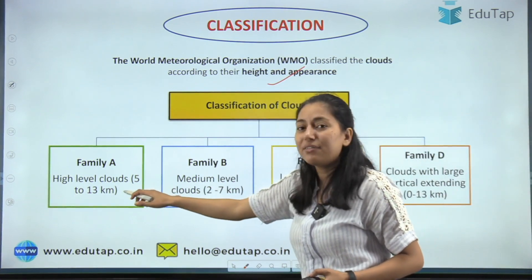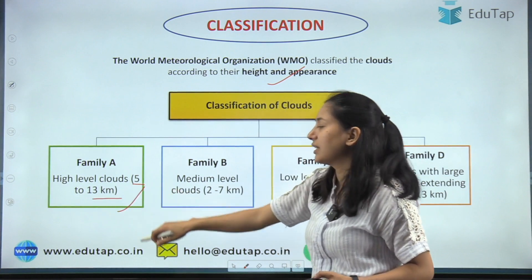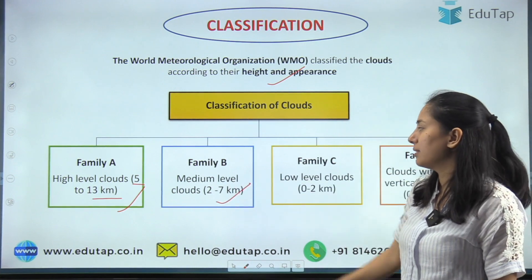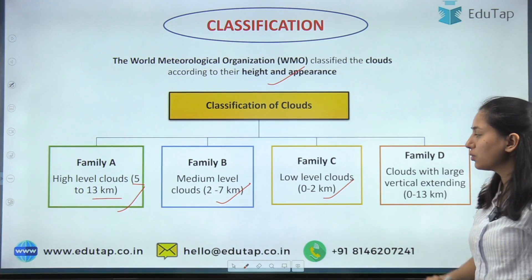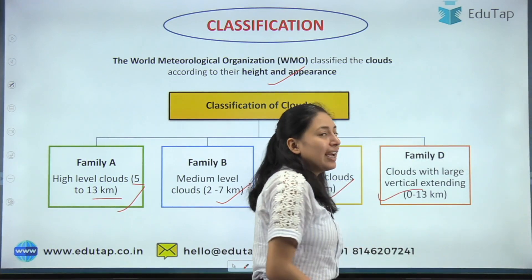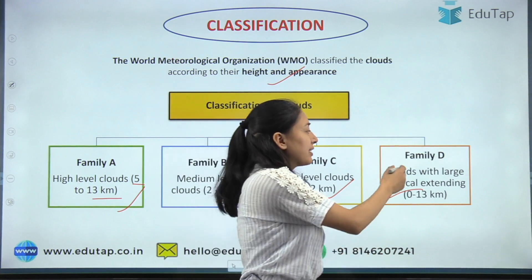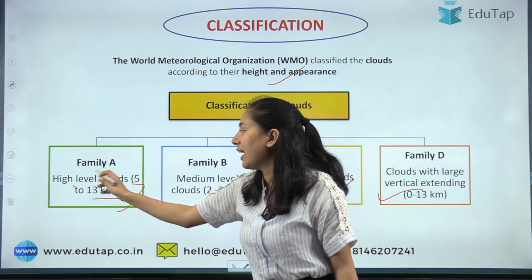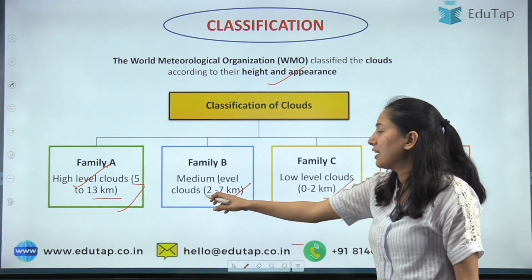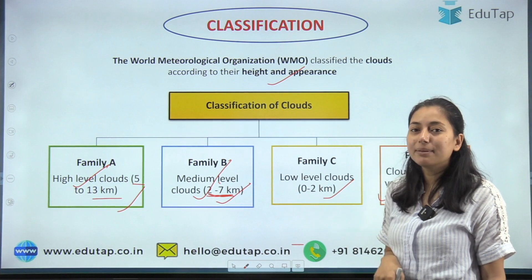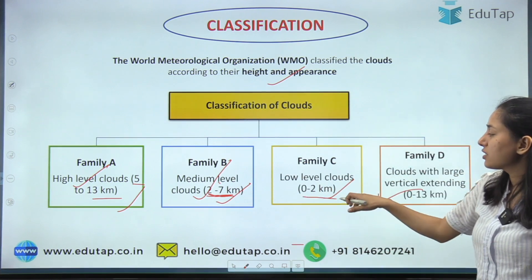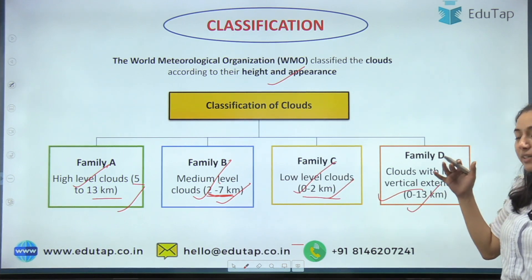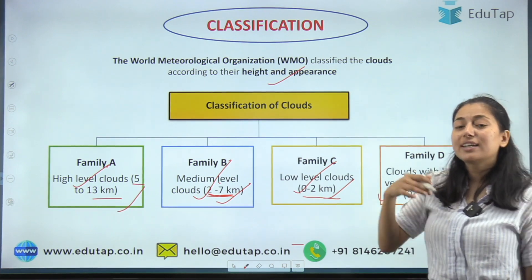If a cloud has an altitude of 5 to 13 kilometers, it is kept in Family A. If it has an altitude of 2 to 7 kilometers, it is kept in Family B. If the altitude level is 0 to 2 kilometers, it is kept in Family C. And if the altitude is from 0 to 13 kilometers, it is kept in Family D. So Family A is high-level clouds, Family B is medium-level clouds, Family C is low-level clouds, and Family D is large vertically extending clouds.